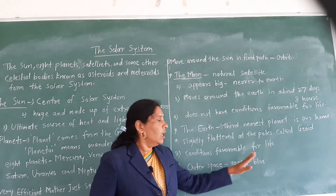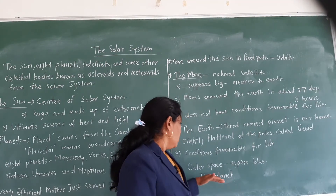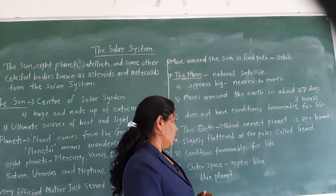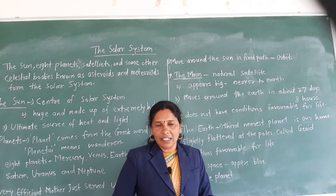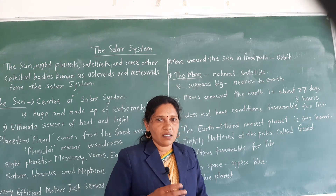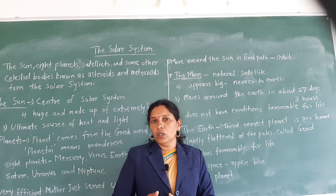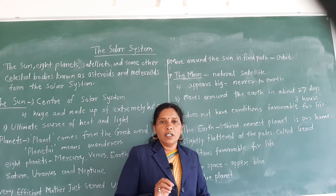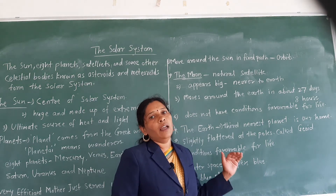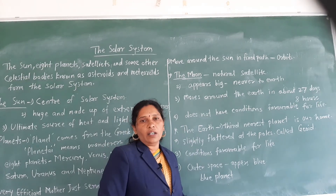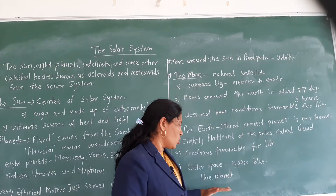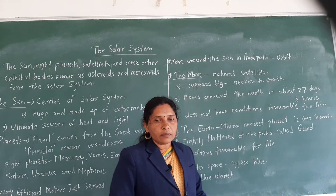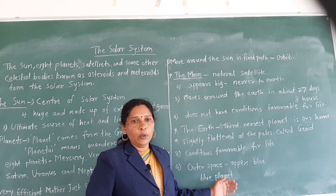From outer space, if we look at the Earth, it appears blue. It looks blue because three-fourths of the Earth's surface is covered by water, and because of that it appears blue. So the Earth is called the blue planet.